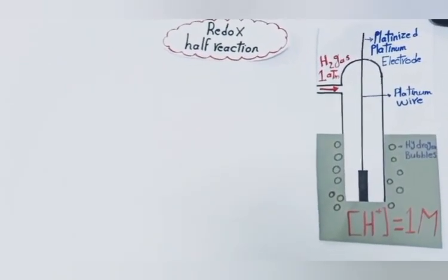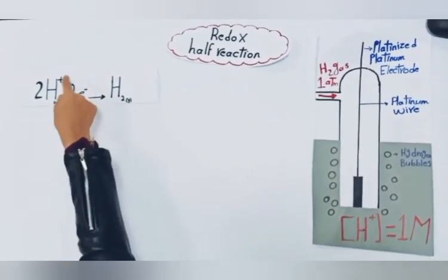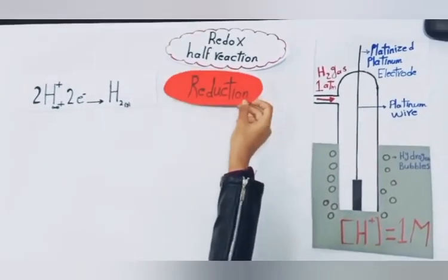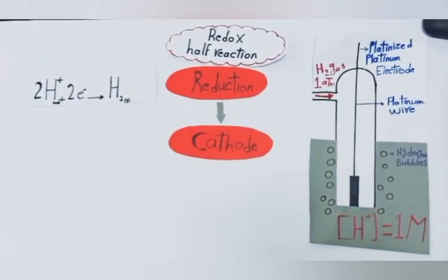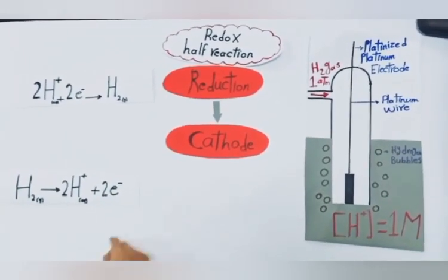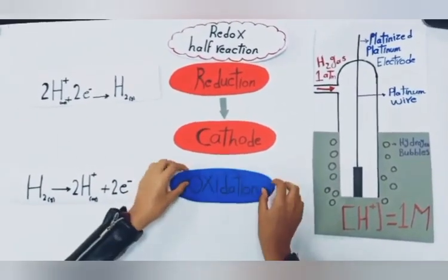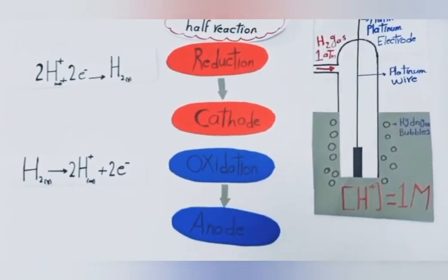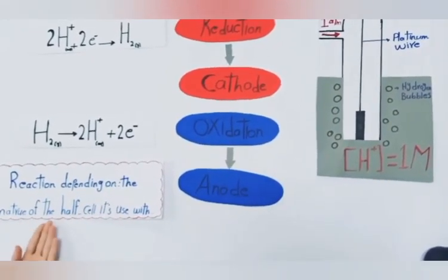The redox half-reaction can occur in two forms. The first form: two hydrogen ions will gain two electrons and be converted to hydrogen gas — this is a reduction, and the electrode will act as a cathode. The second form: hydrogen gas will lose two electrons and be converted to hydrogen ions — this is an oxidation, and the electrode will act as an anode. The reaction depends on the nature of the other half-cell connected to it.